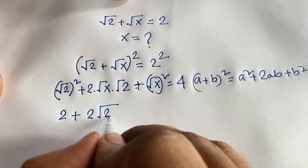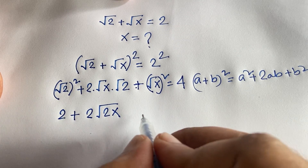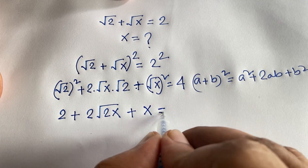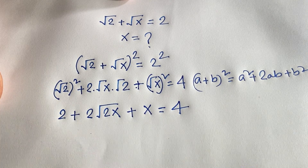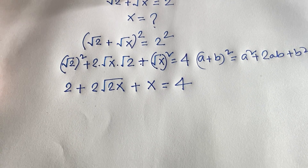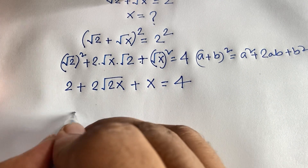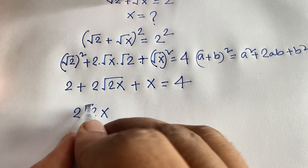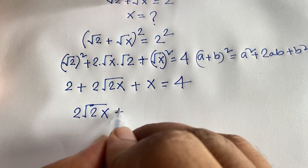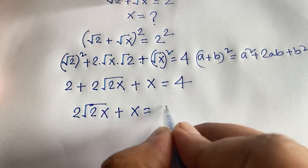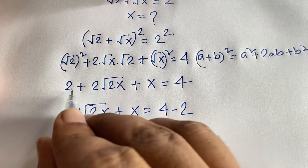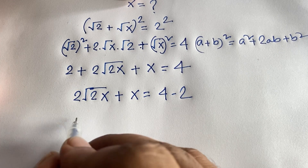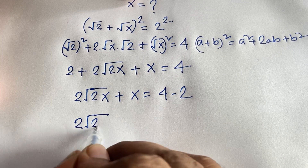So the equation becomes: 2 plus 2 times square root of 2x plus x equals 4. Then I move the 2 to the other side — it becomes negative 2 — giving us 2 square root of 2x plus x equals 4 minus 2.